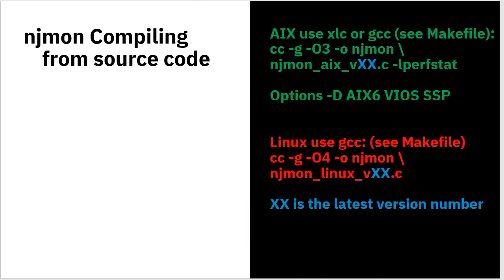You can compile NJMon yourself from the source code — it's freely available on the wiki. If you're on AIX, you can use the IBM compiler called XLC or the GNU compiler. You can find details in the makefile, which is also downloadable. The standard option -O3 switches the optimizer on to make the code a bit faster. The XX in the filename is the latest version number — we're currently at 32. You need to include the libperfstat library. If you're compiling on AIX 6, you need -d AIX6, because some things are missing in the older perfstat library.